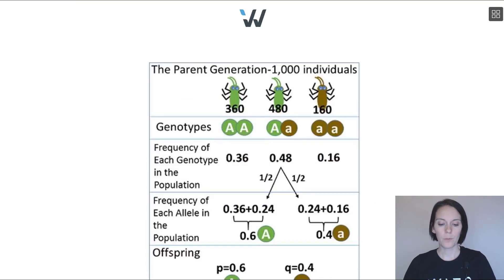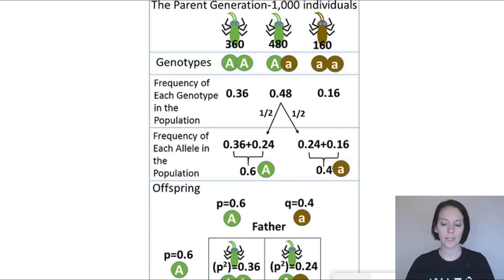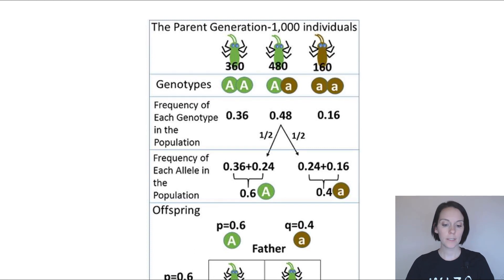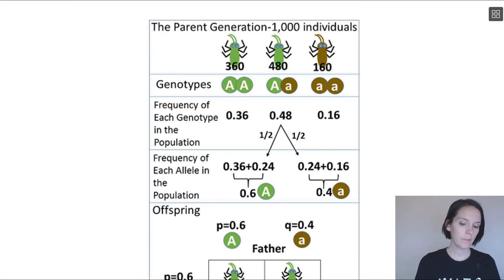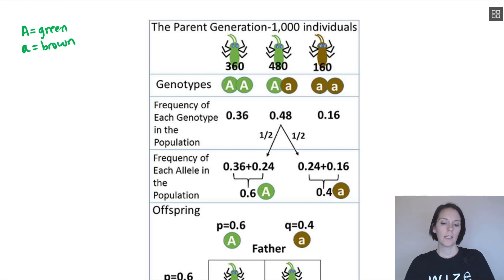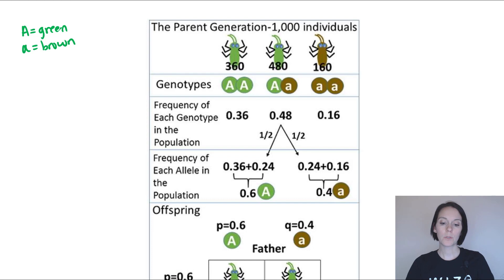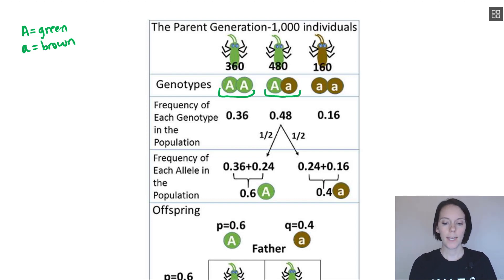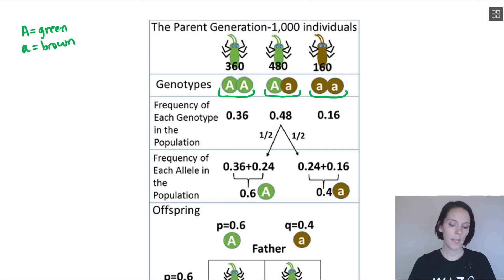Let's look at the Hardy-Weinberg equilibrium using this diagram of bugs to illustrate it. In this population, we have two alleles: the big A allele, which gives green bugs, and the little a allele, which gives brown bugs. Since these organisms are diploid, they have two copies of this gene. The possible genotypes are big A big A (green bug), big A little a (also green), and little a little a (brown bug).